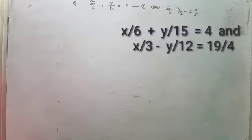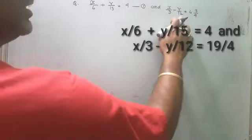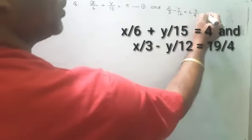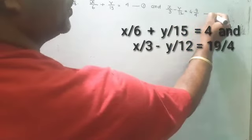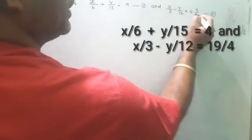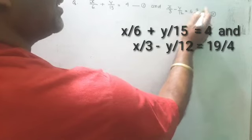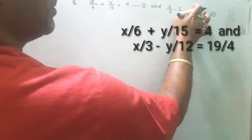Next question: x by 6 plus y by 15 is equal to 4, and x by 3 minus y by 12 is equal to 4 and 3 by 4, which is 19 by 4. This is equation two. The equations are in fraction form; you can change to simpler form if you wish, or work directly with the fractions.